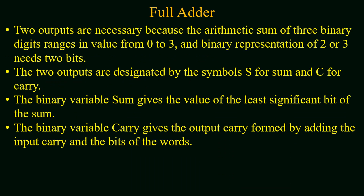In a full adder, two outputs are needed because the arithmetic sum of three binary digits ranges from zero to three, and the binary representation of two or three requires two bits.